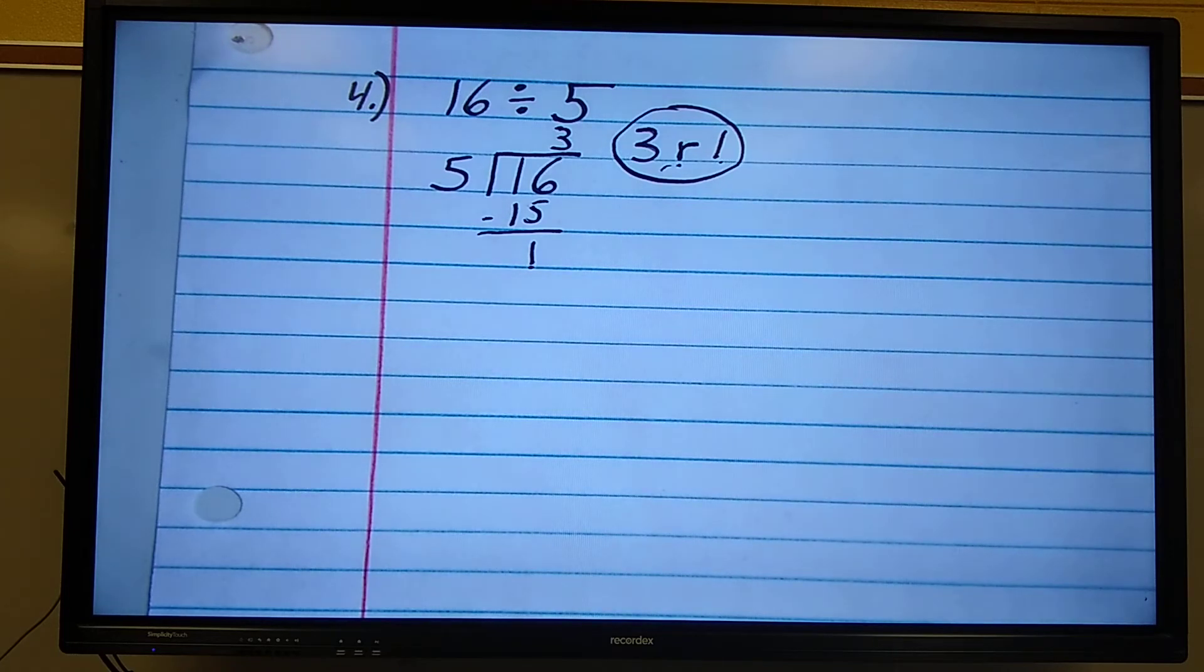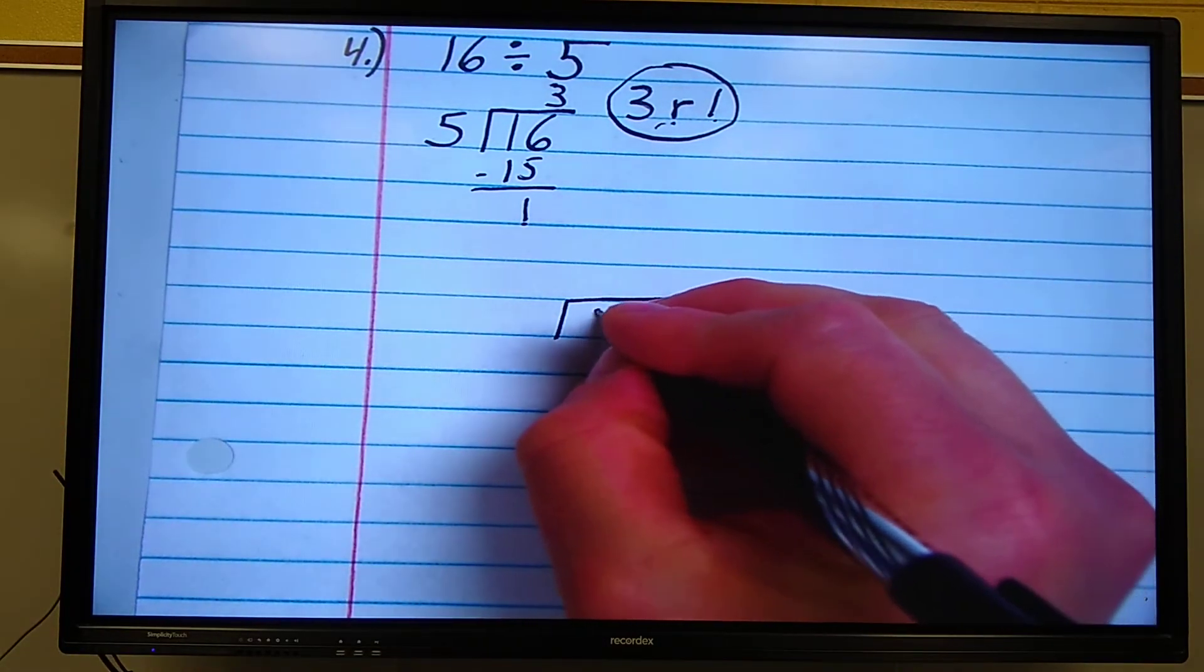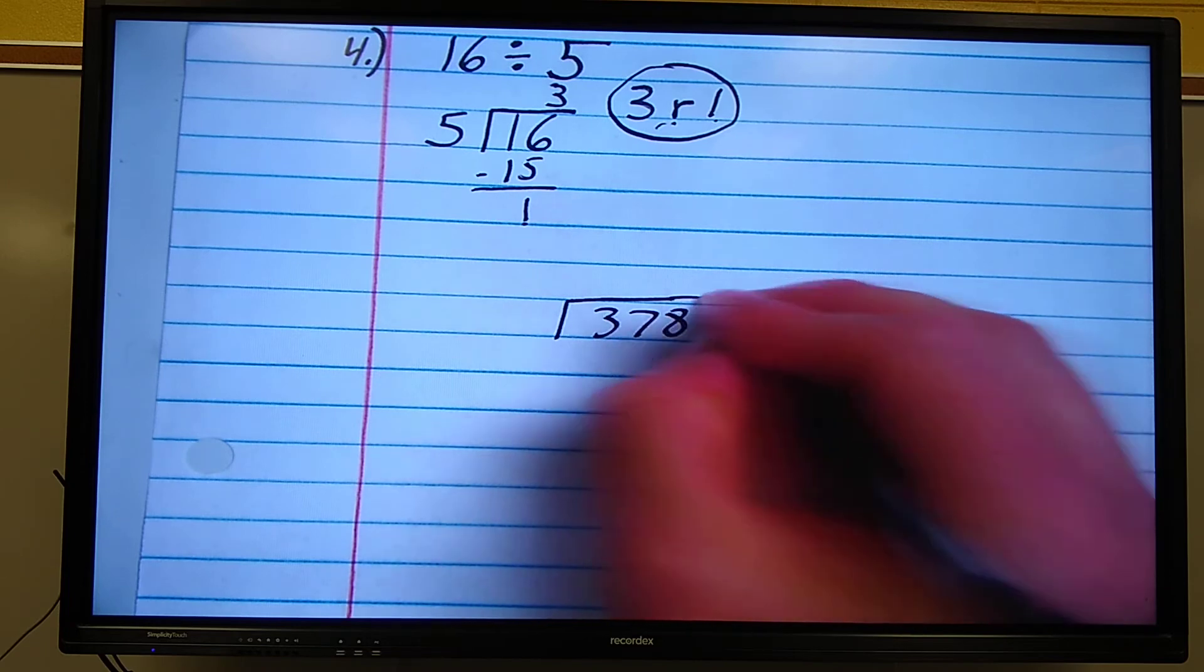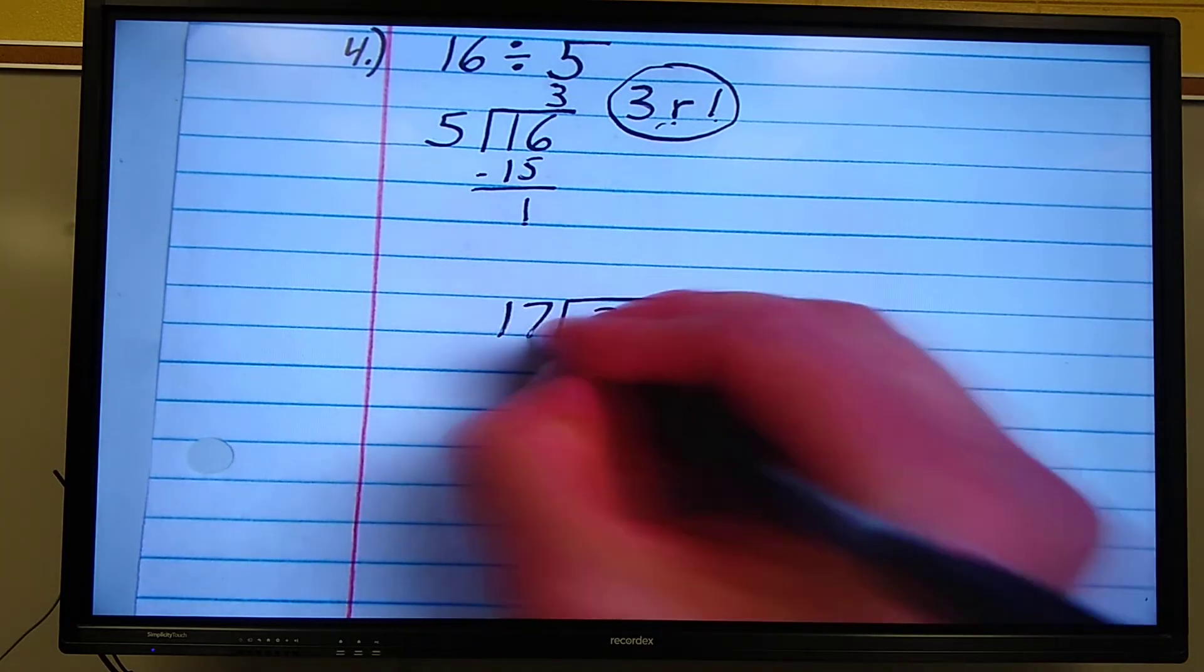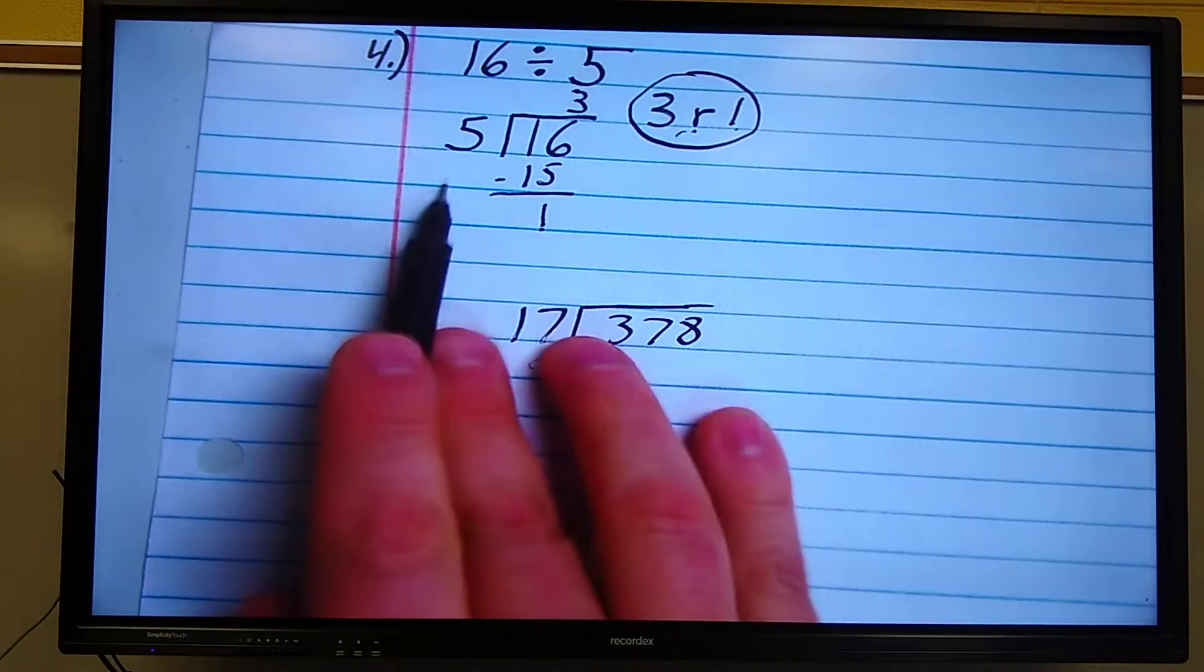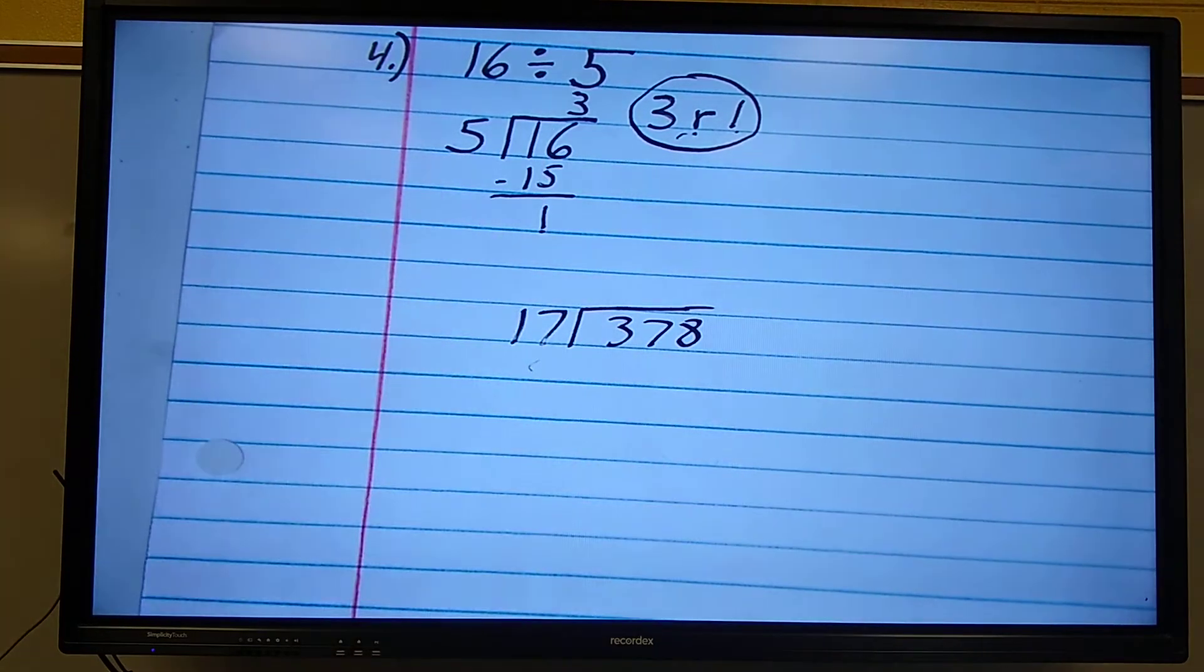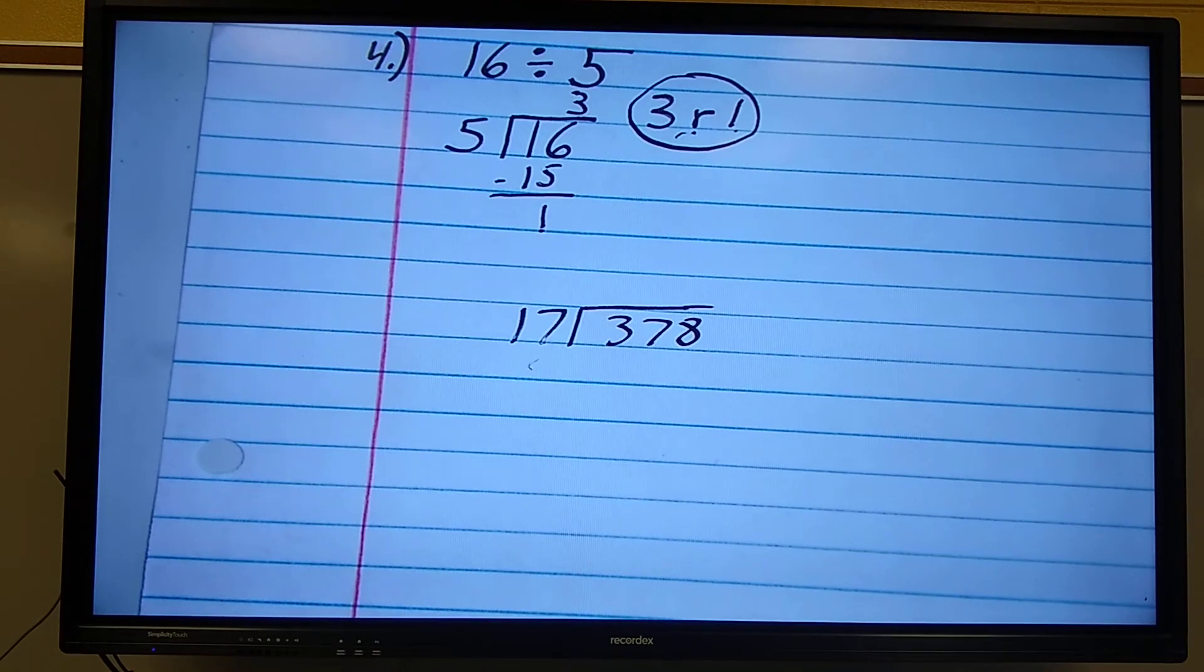There you have it, little fifth graders. That's how you divide whole numbers with a divisor of one digit. Now we're going to practice this a couple days and then we're going to end up doing problems like this. Let's say we have 378 divided by 17. We'll have two digit divisors instead of just one digit like we're practicing today. But we're going to practice this a little bit to get used to our steps. Then we're going to move on.